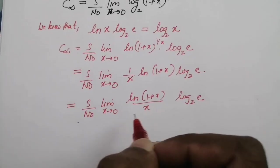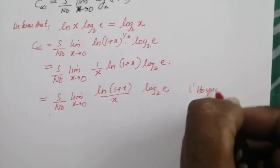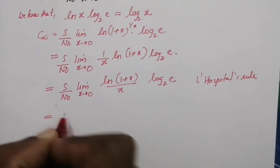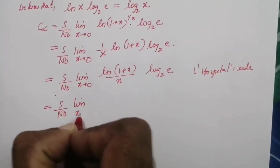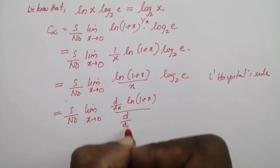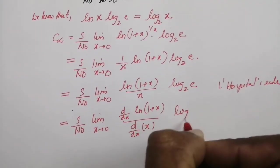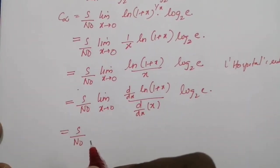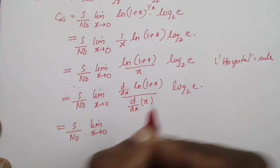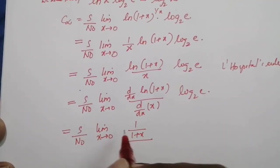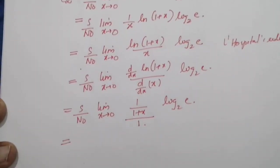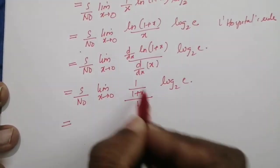Applying L'Hôpital's rule, we write C∞ = (S/N0) · limit as x→0 of [d/dx of ln(1 + x)] divided by [d/dx of x], multiplied by log₂(e). The derivative of ln(1 + x) is 1/(1 + x), and the derivative of x is 1. As x tends to 0, 1/(1 + x) tends to 1, so the limit equals 1.